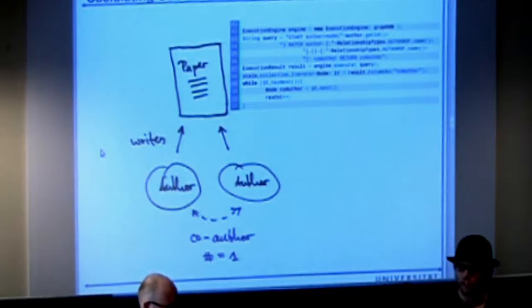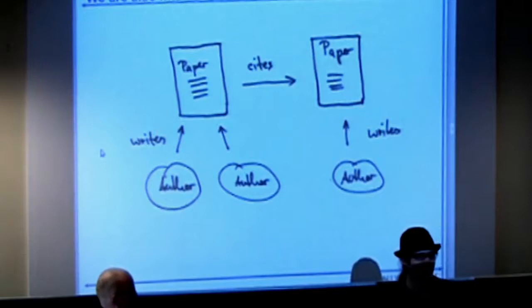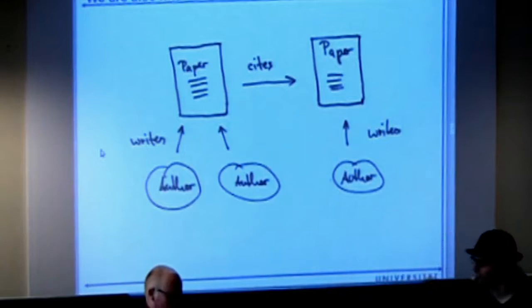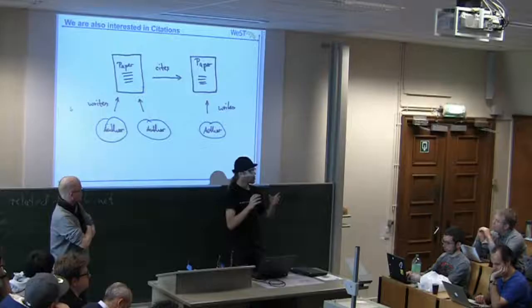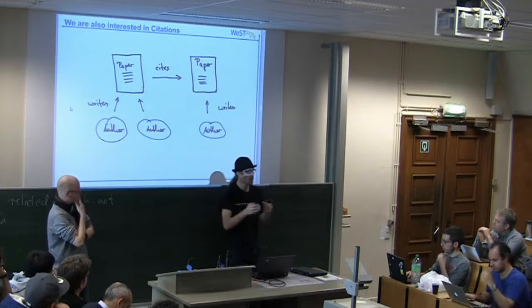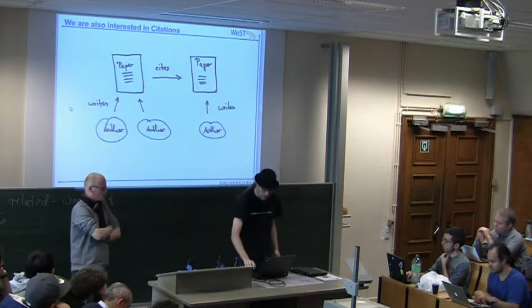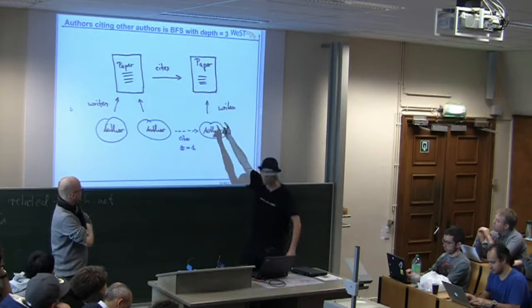We're also interested in citations. Heinrich extracted all citations from arXiv — already about a million papers. We can see which papers cite which papers. But in real life, I want to know which researcher do I pay a lot of attention to? If I write a paper and look at who I cite and who wrote those papers, that's a graph traversal of depth 3 — again breadth-first search.